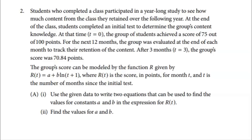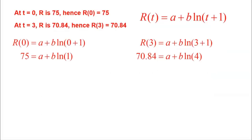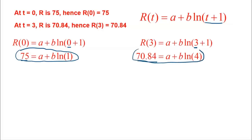Part A asks us to write two equations to find constants a and b. Using the two pieces of information — score of 75 at t = 0 and score of 70.84 at t = 3 — we substitute into the model. At t = 0: 75 = a + b·ln(1). At t = 3: 70.84 = a + b·ln(4). Those are our two equations, with only a and b unknown.